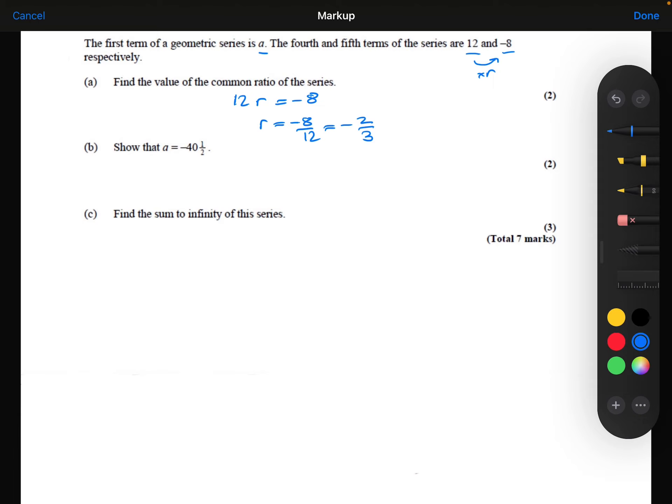Part B, we need to show that A is minus 40 and a half. So my first term is A. My second term would be A times R. My third term would be A times R squared. The fourth term would be A times R cubed, and we know that's equal to 12.